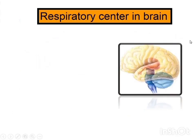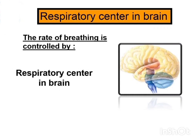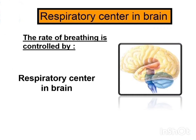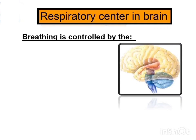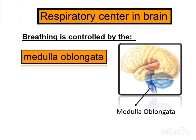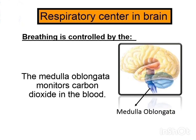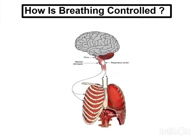Now let's discuss the respiratory center in the brain. The rate of breathing is controlled by the respiratory center, which is present in the brain. Breathing is controlled by the medulla oblongata — you can see the medulla oblongata in the diagram. The medulla oblongata monitors carbon dioxide in the blood.